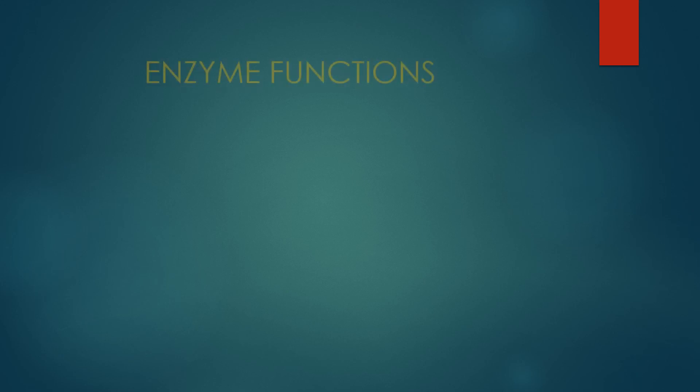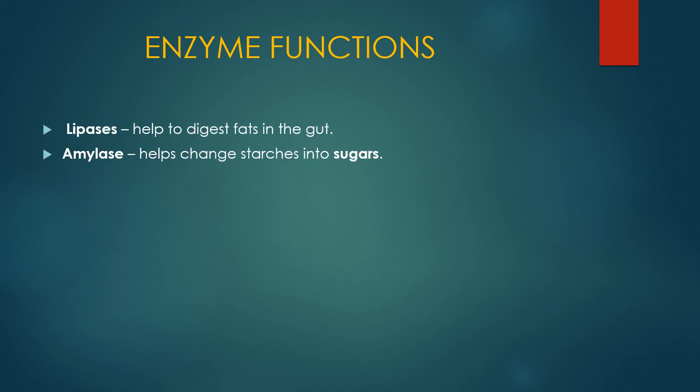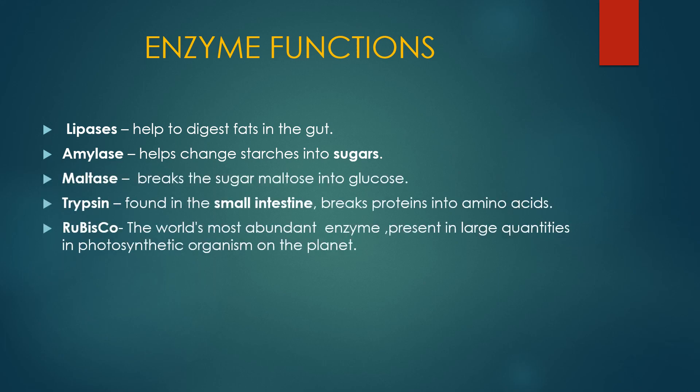Digestive Enzymes: Lipase enzyme fats کو digest کر کے fatty acids اور glycerol میں change کرتا ہے small intestines میں. Amylase enzyme starches کو break up کر کے sugar میں convert کرتا ہے. Maltase enzyme maltose کو glucose میں break up کرے گا. Trypsin enzyme small intestines میں function کرتا ہے اور polypeptide chains کو dipeptides اور amino acids میں change کرے گا. RuBisCO enzyme is very important to carry out photosynthetic activity in all green plants, and RuBisCO is the most abundant enzyme on Earth.